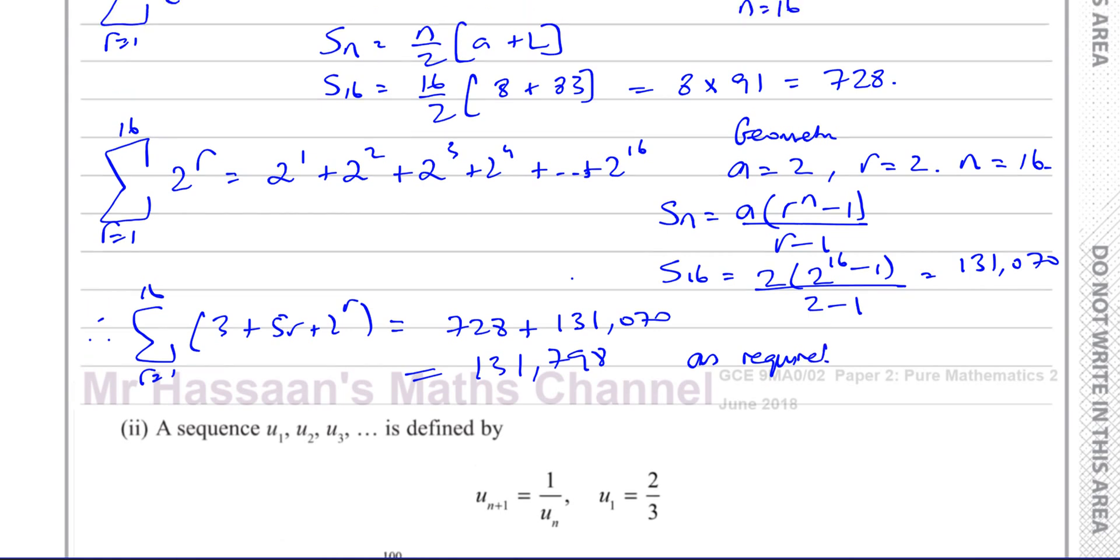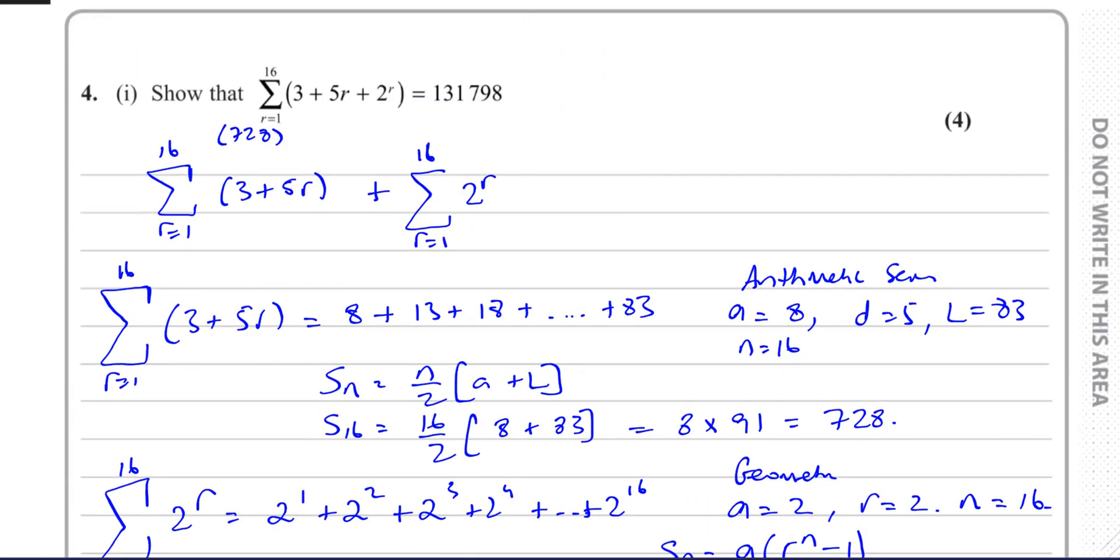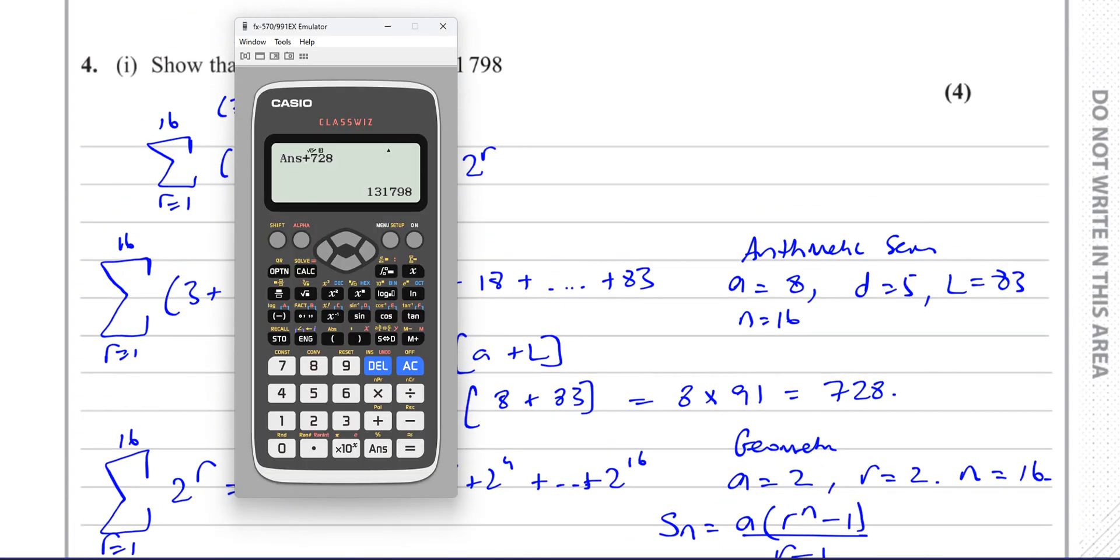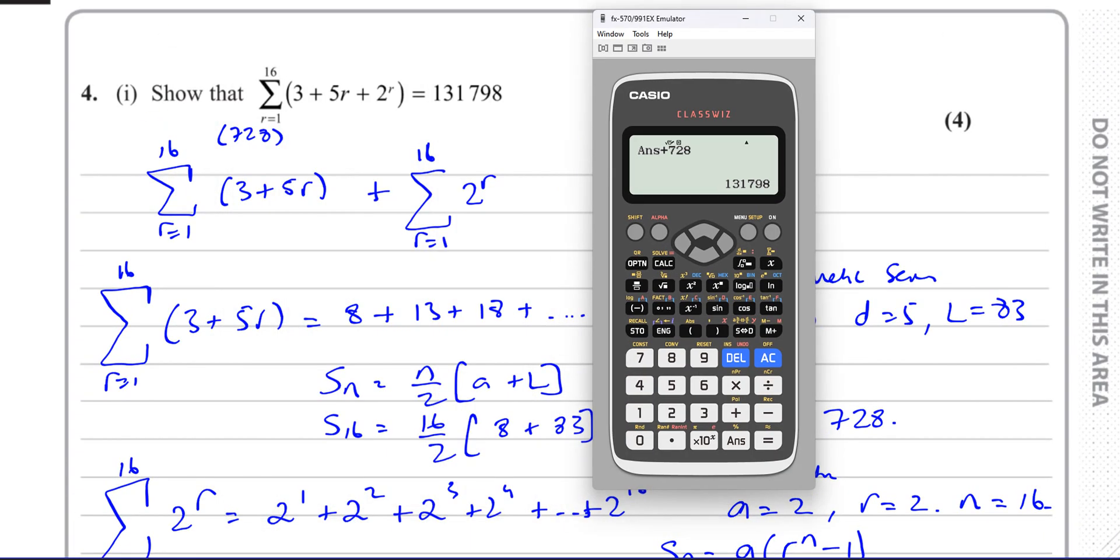We can be sure that we got the right answer because the answer's there in the question. If the answer wasn't there, it said find, supposing it said find the sum of this, and they didn't have the answer. So you weren't sure at the end you got this answer. You're not sure is it correct or not. You could check that in the exam by simply using this function. And this function should not be used except to check your answer because there's no point in doing it. Otherwise, you won't get any marks if you just write the answer down.